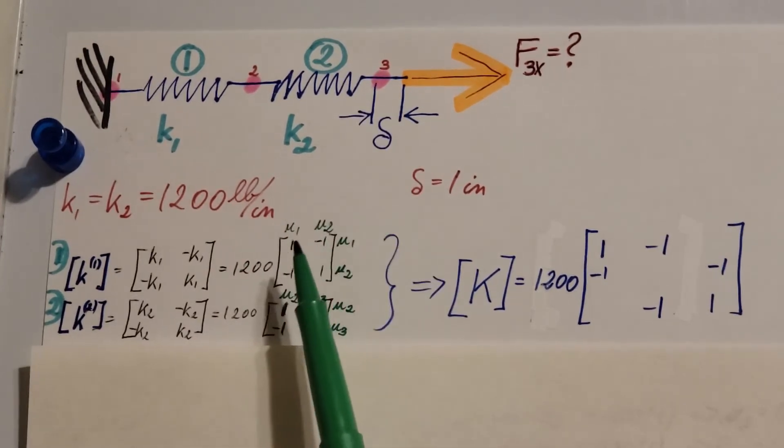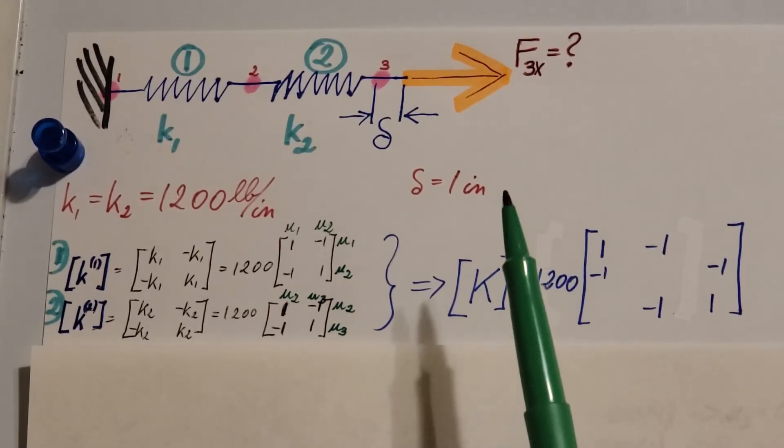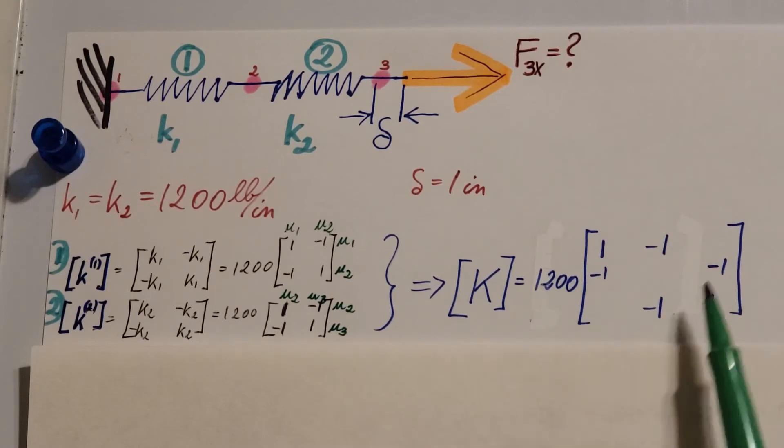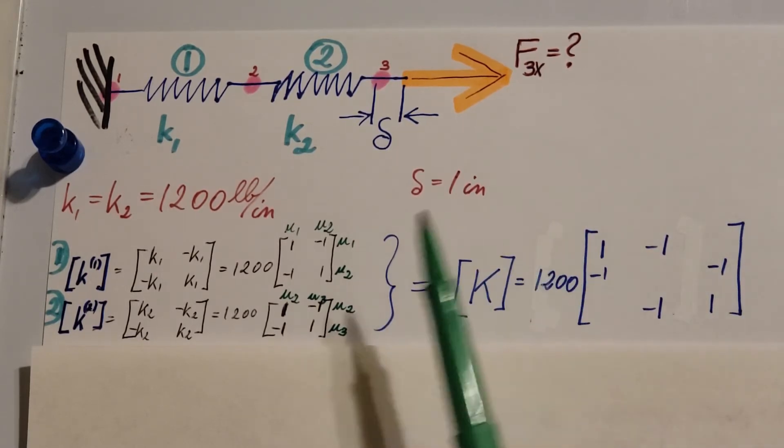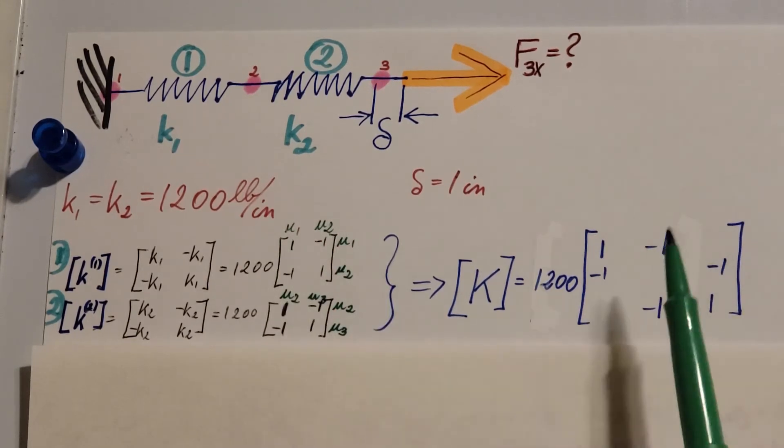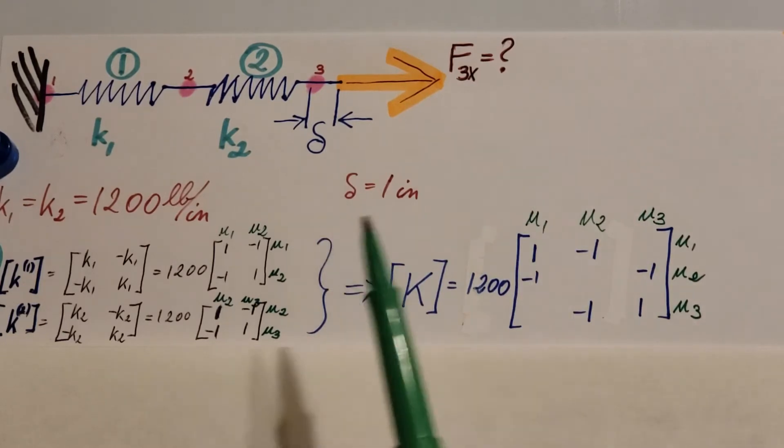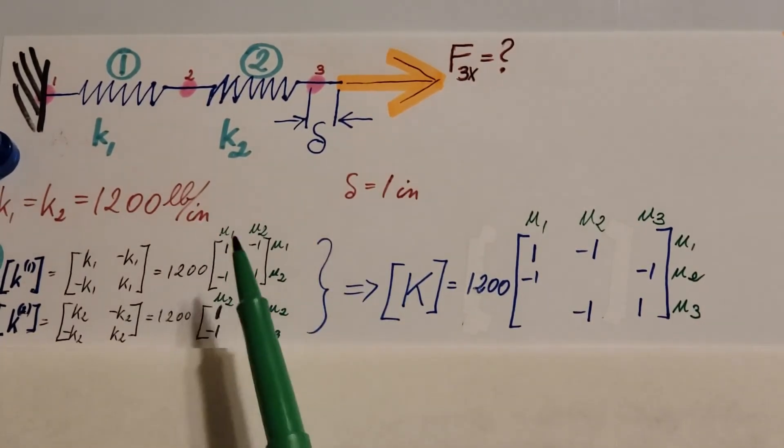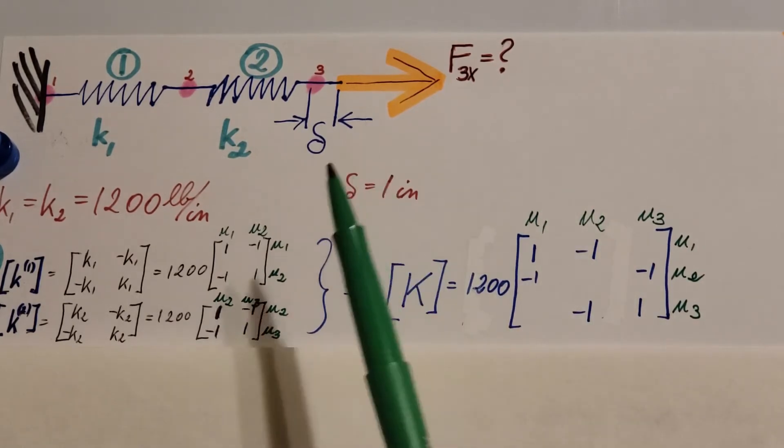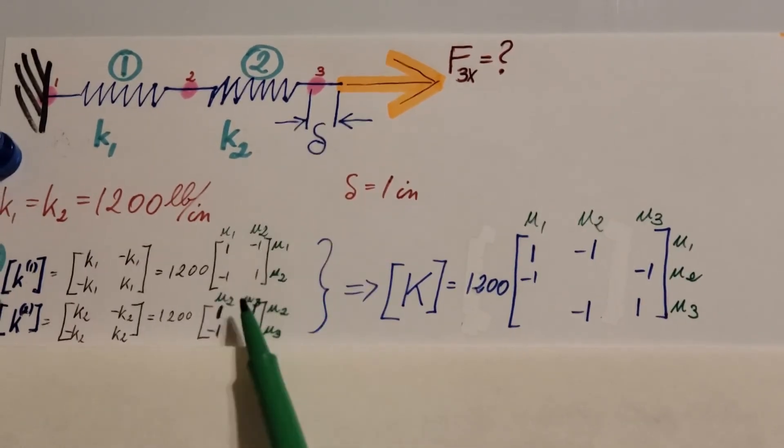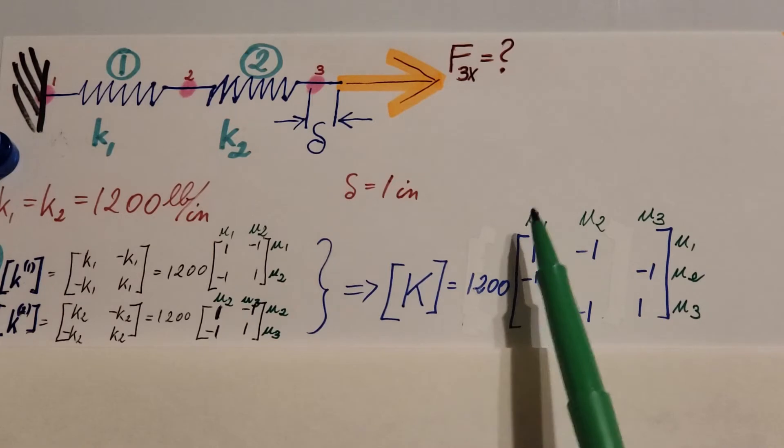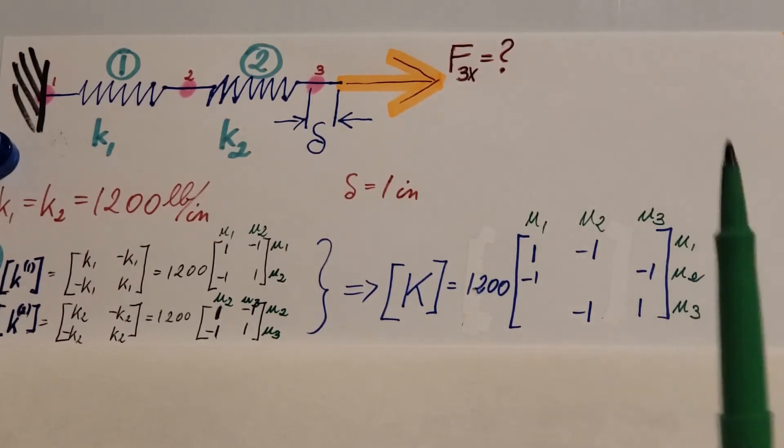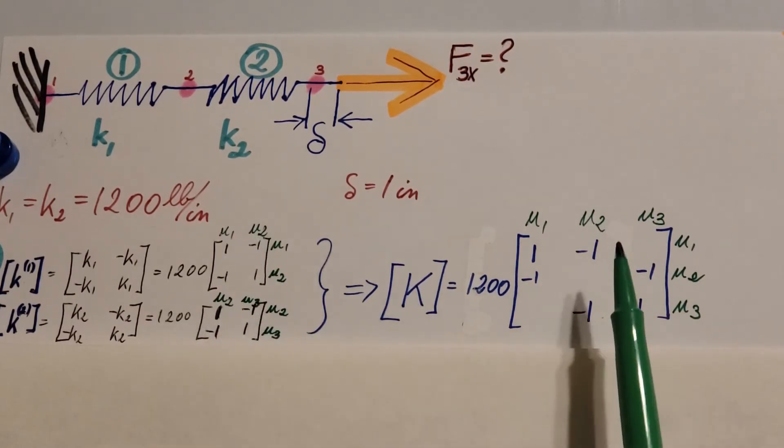This will be very important at the next step right here, where we're going to be finding the global stiffness matrix. I already filled in some of it, just so we can have some structure. But up here, I like to put the same information that I did over here, just so we can fill it in much easier. Now let's transfer this information from these two local matrices into the global one. U1, U2, and U3 are our points, which need to be represented in the global stiffness matrix as well. So I put them up here, U1, U2, U3, U1, U2, U3.